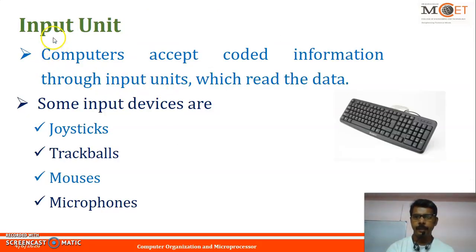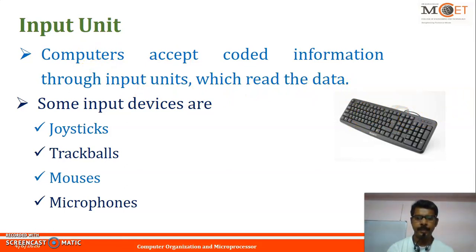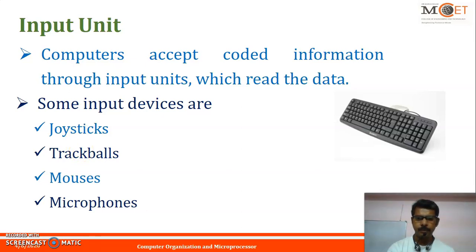The computers accept coded information through input units which read the data. The best example of an input device is the keyboard — whenever a key is pressed, the corresponding letter or digit is automatically translated into its binary code and transmitted over a cable to either the memory or the processor. Other input devices include joystick, mouse, and microphone. The microphone captures audio input, which is sampled and converted into digital codes for storage and processing.